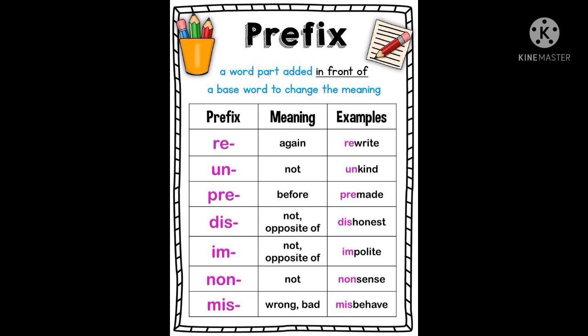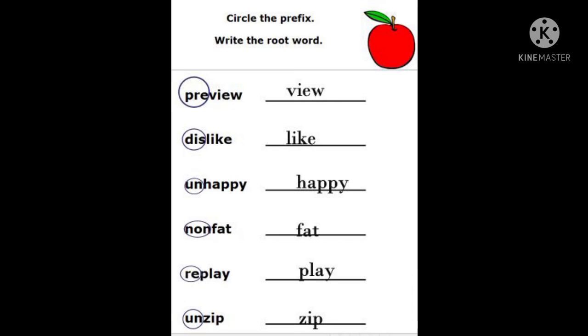Let's see some more examples for prefix. In this chart, some words are given: rewrite, unkind, premade, dishonest, impolite, nonsense, misbehave. Children, you circle the prefixes in this chart and write the root word separately.